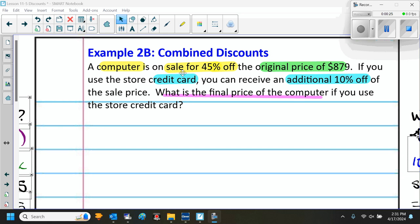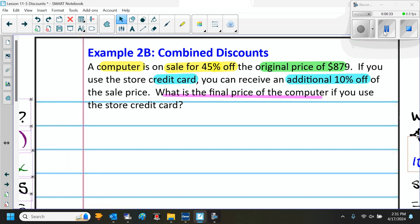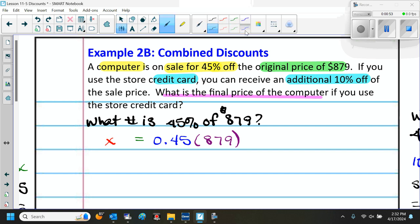The first thing we want to know is what is 45% of $879. So here is our what number question. Once we have our what number question, then we can translate from English to math. What number, that's the X, is in math means equals. The 45% we need to change to a decimal, so we take away the percent sign. That gives us 0.45 of, in math means multiply, so we're going to multiply by 879.